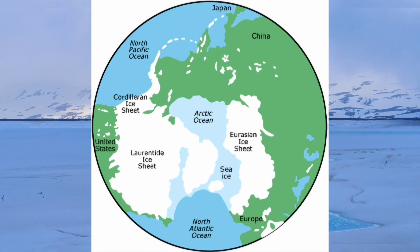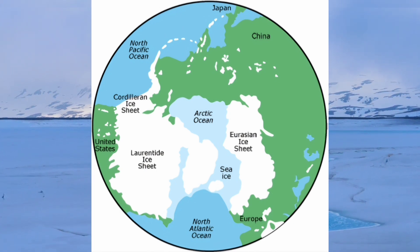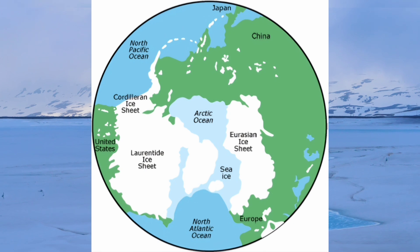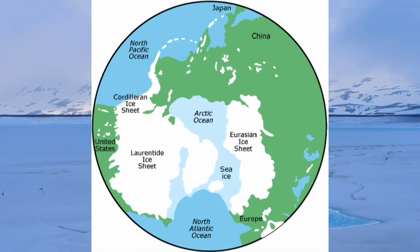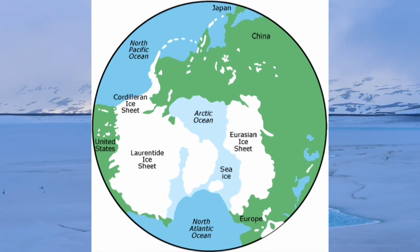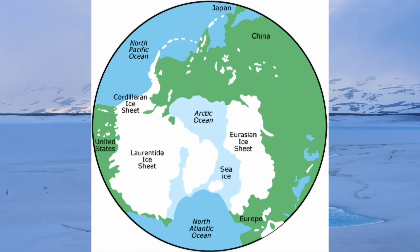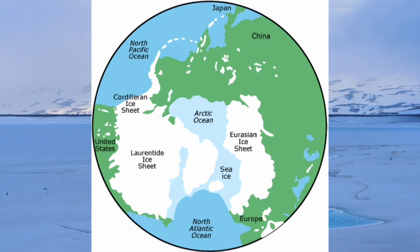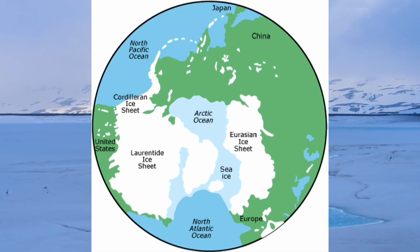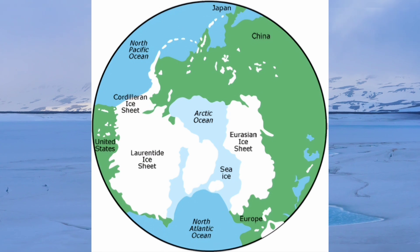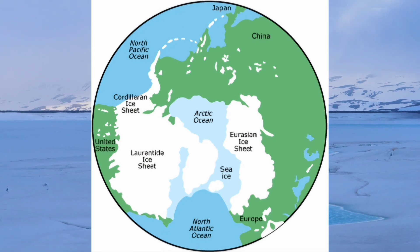The Laurentide ice sheet covered much of North America, extending as far south as present-day New York City, Chicago, and the northern Great Plains. The Fennoscandian ice sheet spread across northern Europe, reaching as far south as modern-day Germany and Poland. In Asia, the Siberian ice sheet influenced vast areas, while mountain glaciers dominated regions such as the Himalayas and the Alps.